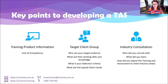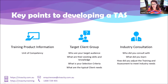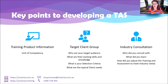Key points when reviewing your TAS: make sure it's current with the current version of the training product on your scope of registration. Go to training.gov.au, look at your scope, check the versions, and make sure your TASs have been updated to those latest versions. It's really important to record on your TAS what version you reviewed it against — on TGA you'll see different versions of training products.